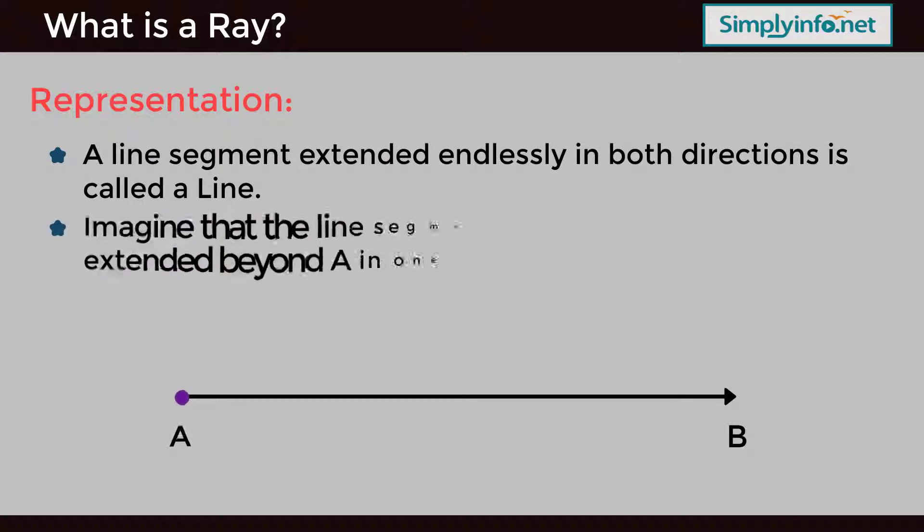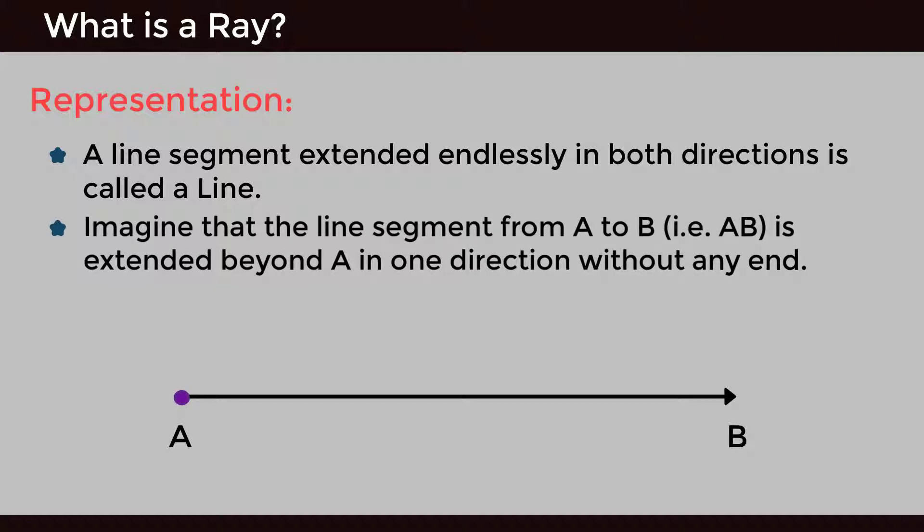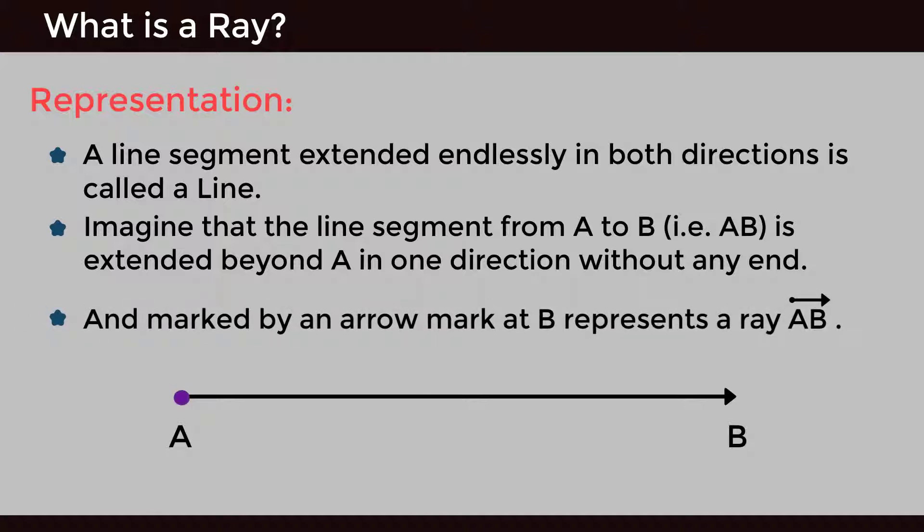Imagine that the line segment from A to B, i.e., AB, is extended beyond A in one direction without any end and marked by an arrow mark at B. This represents ray AB.